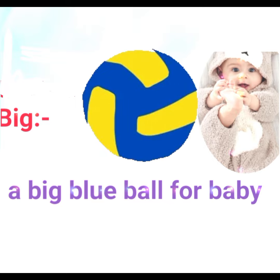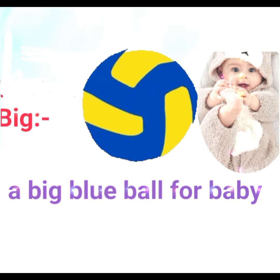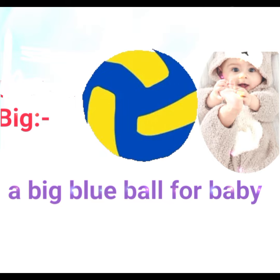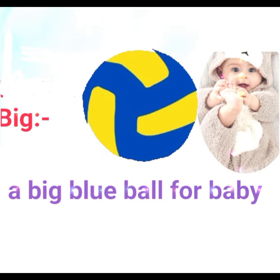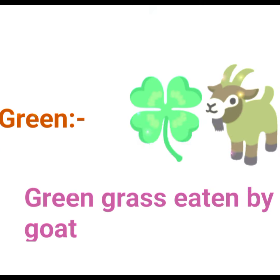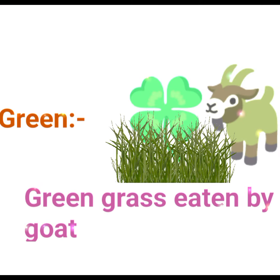Now make the sentence: 'A big blue ball for baby.' Now the next word is 'green' — G for green, G for grass, G for goat.